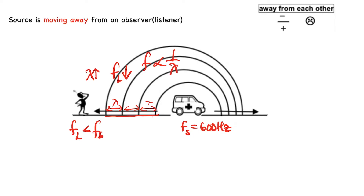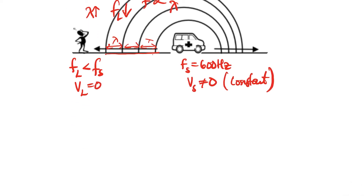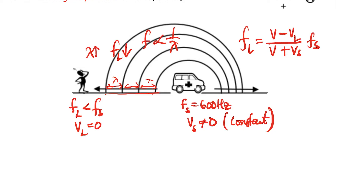Always, when there's motion away from each other — whether it's the source or the listener moving away — the frequency of the listener will be less than the frequency of the source. For the calculation, using the formula when they move away from each other: in the numerator there is a minus, and at the denominator there is a plus. So it will be (V minus VL) divided by (V plus V source), multiplied by the frequency of the source.